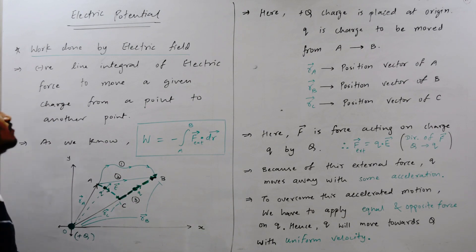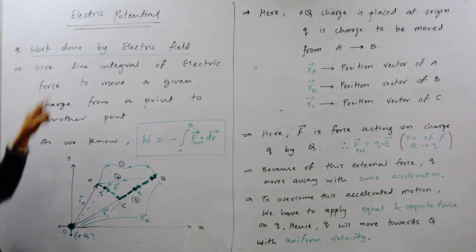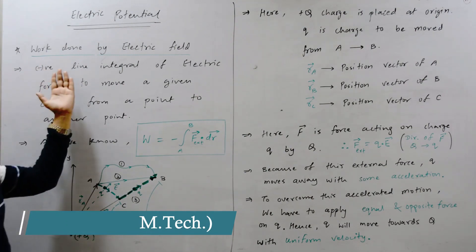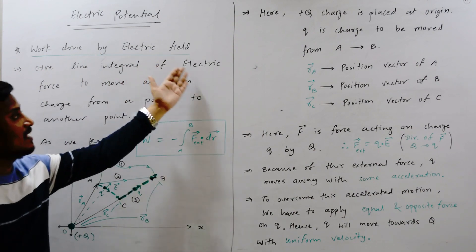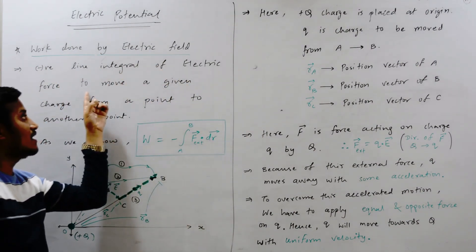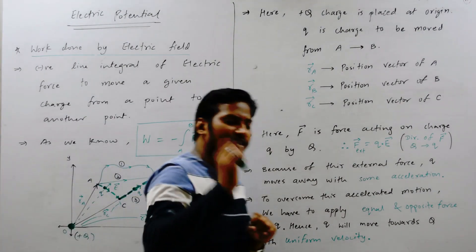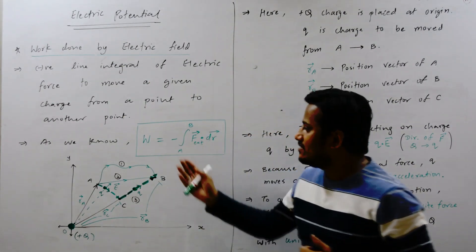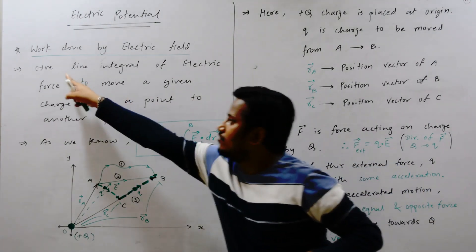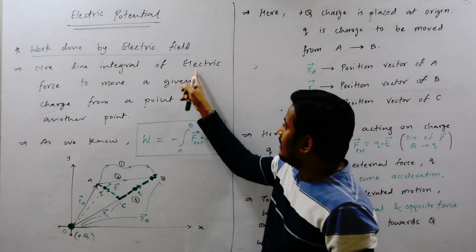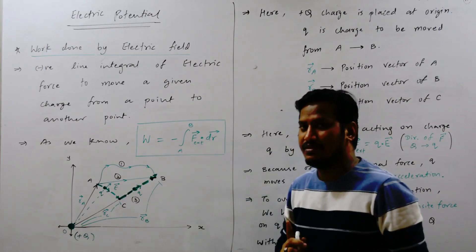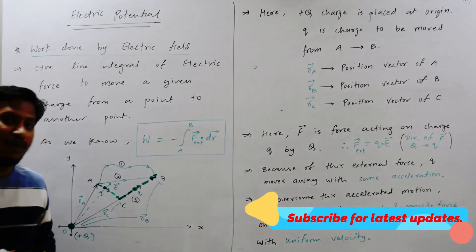Good morning dear students. Today we are going to discuss about electric potential. For electric potential, first of all you have to understand the work done by the electric field. The work done by the electric field is the negative line integral of electric force to move a given charge from a point to another point. This statement can be represented mathematically as W equals the negative line integral of electric force from point A to point B.